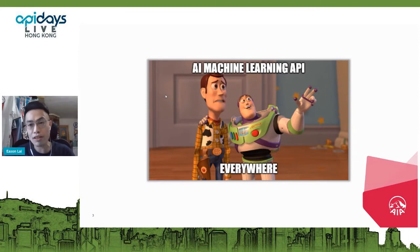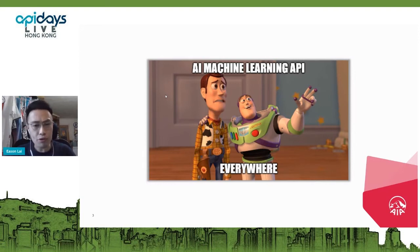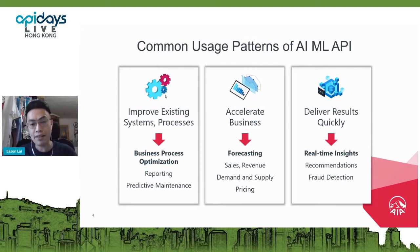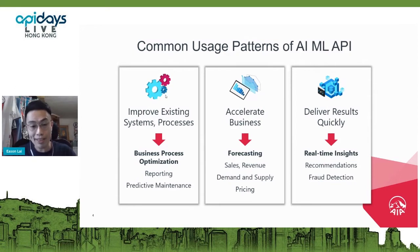We also build speech models to do speech-to-text and text-to-speech, served via API as well. There are many use cases where we see AI and machine learning models everywhere. I'm trying to summarize the common usage patterns of AI and ML APIs into three different pillars. The first pillar is about improving existing systems and processes. The second pillar is about accelerating business — for example, forecasting. The third pillar is about delivering results quickly.